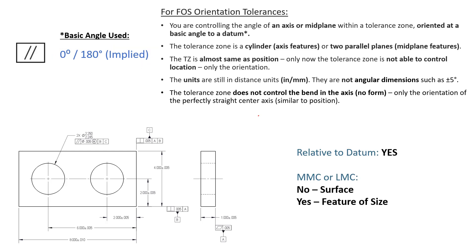This is implied by today's standard. We do not use the square symbol for perpendicularity anymore, although you may still see it. It's not necessary because perpendicularity is implied at 90 degrees. For parallelism, it's implied to be at 0 or 180 degrees. So if it looks parallel to something, that is the basic angle — parallelism is called out at 0 or 180.